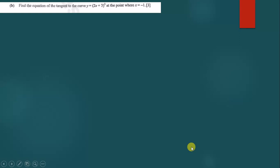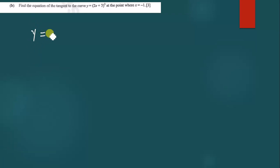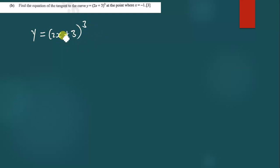This is a very simple question. We have been given y is equal to (2x + 3) to the power 3. I'm going to use what is known as the chain rule to differentiate this, because the first derivative of any equation is known as the gradient function.